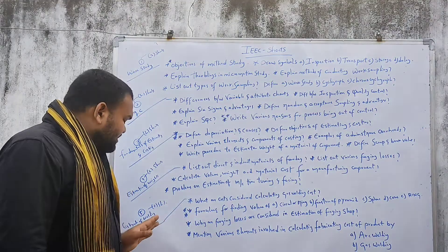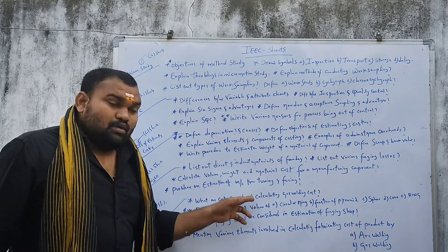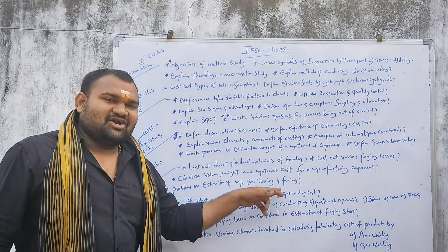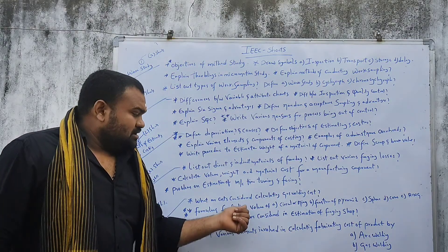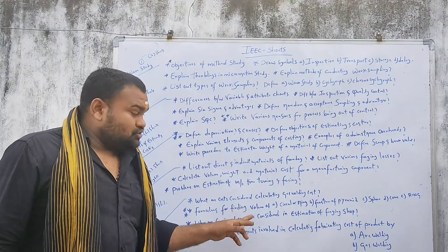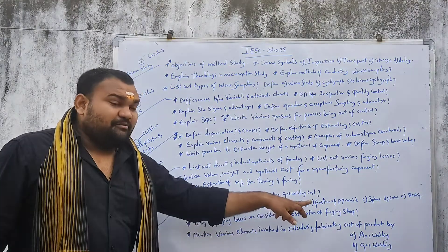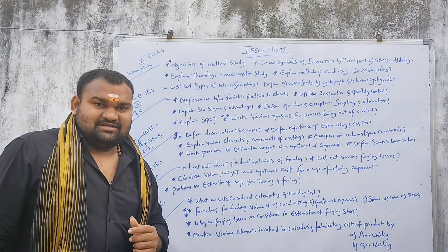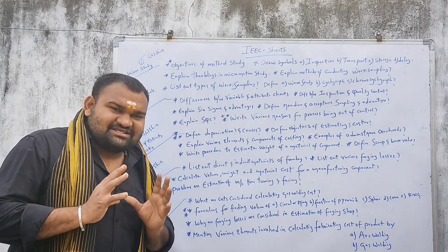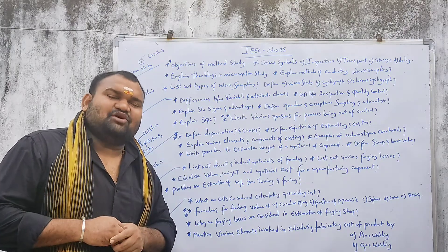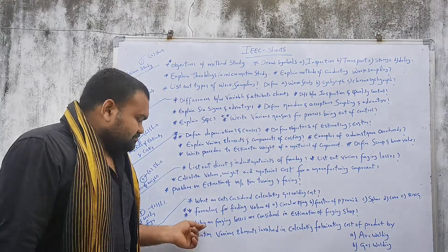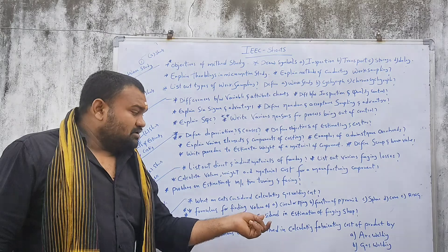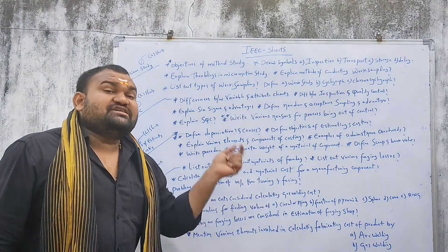Last and final chapter: Estimation of Welding and Forging. What are the costs considered for calculating gas welding cost? Formulas for finding volume — very important question — for circular ring, frustum of pyramid, sphere, cone, and ring. Why are the forging losses considered in estimating of forging shop? Estimate forging losses for the forging shop.